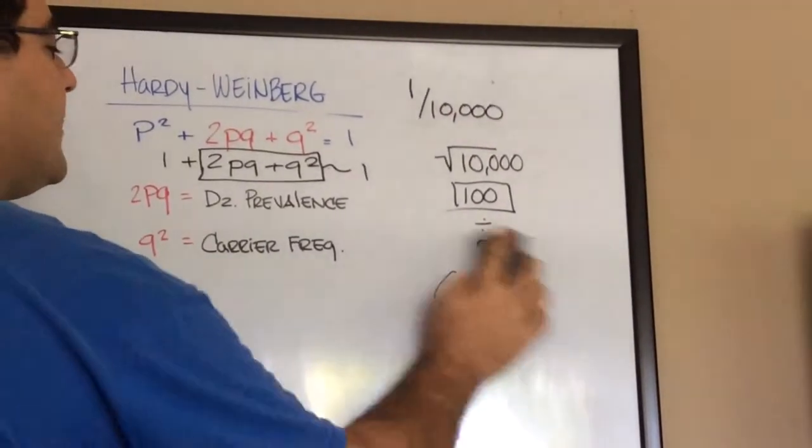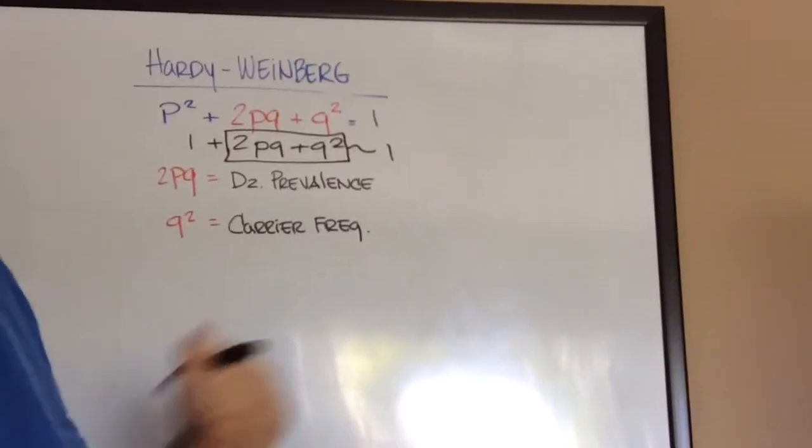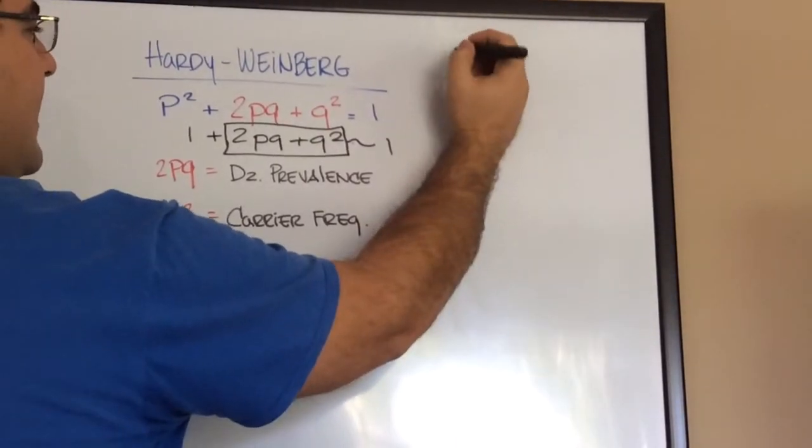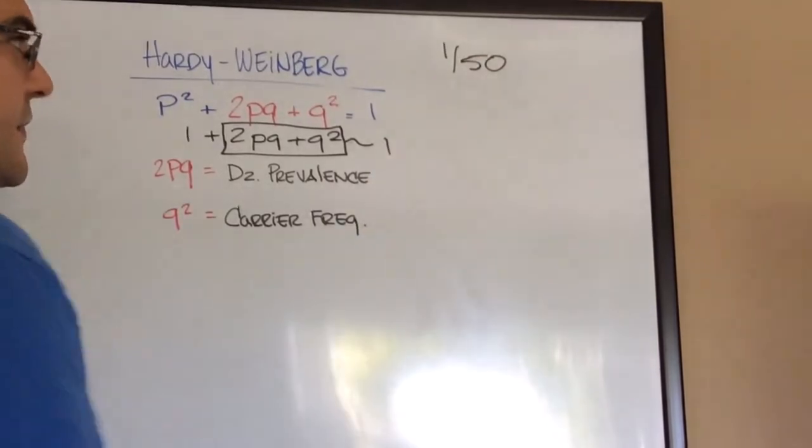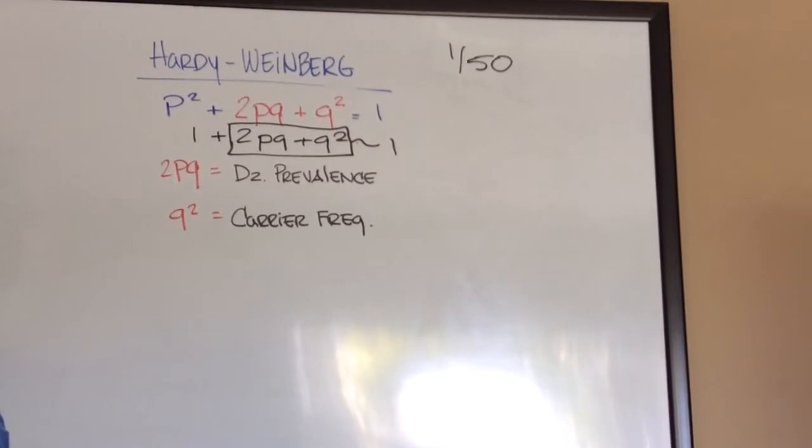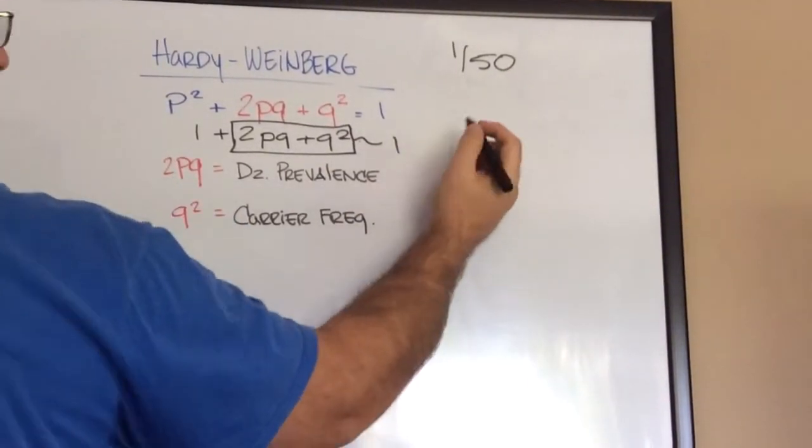What's the other question they can ask you? They can say that a carrier frequency for a disease X, or sickle cell disease, has a carrier frequency of 1 in 50. What is the prevalence? What is the disease prevalence for this disease? So let's take this and work backwards.